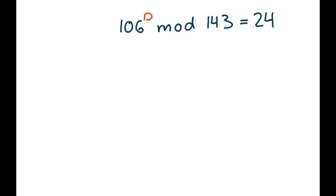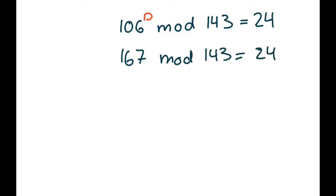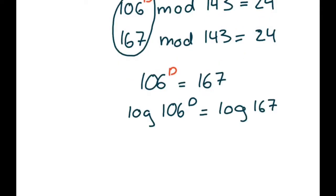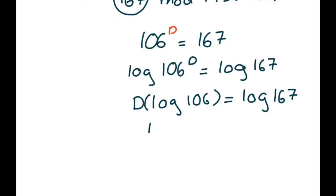The message interceptor knows that 106 to the d power is going to have to be 24 more than 143 for this modular relationship to work. So 143 plus 24 is 167, and 167 mod 143 equals a remainder of 24, because 143 goes into 167 once but leaves a remainder of 24. Knowing that these two are equivalent, the message interceptor can set them equal to each other, then solve for d by taking the log of either side and using the logarithm property of exponentiation to isolate d, and finally solve for d by dividing by the log of 106.